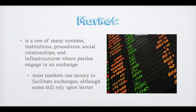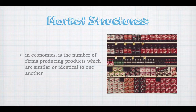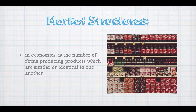In economics, a market structure is basically about how many firms are producing a product and what those firms do. When you walk through a grocery store aisle, maybe there are seven different kinds of flour or 300 different kinds of soda — they're essentially the same product with different variations. The number of firms producing that product is what defines the market structure.